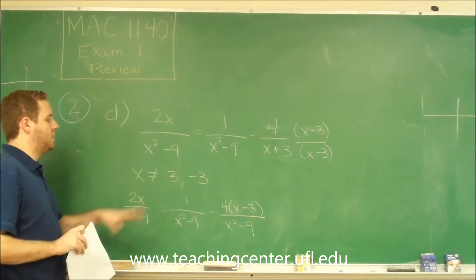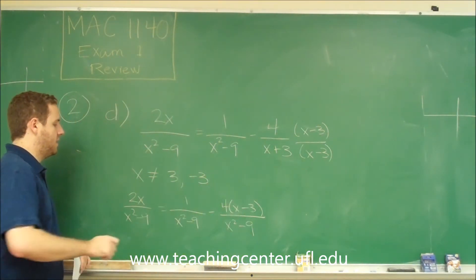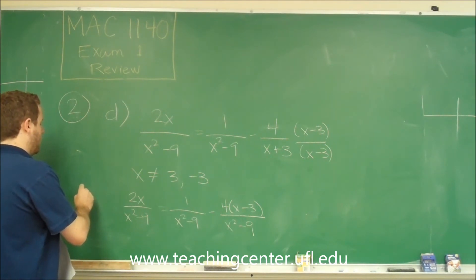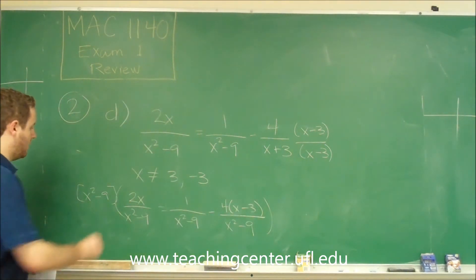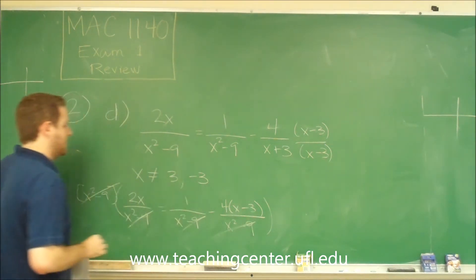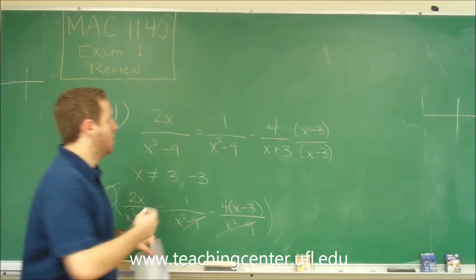Since we already said, well, we know x can't be 3 or negative 3, we can just multiply the whole equation by x squared minus 9. And by doing that, we're going to cancel out all of these denominators and this is going to be a much simpler problem.